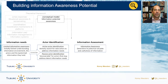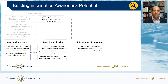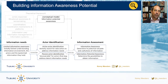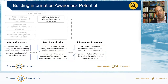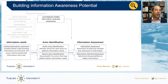The first distinction is that we can look at what information they currently have — what information does an actor have that can address my information needs? But actors may not have all the information readily available, though they could get it. For example, a community that is affected might not know at that moment which buildings are affected in their district or how many.